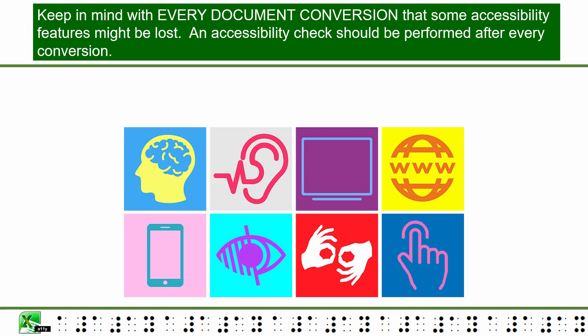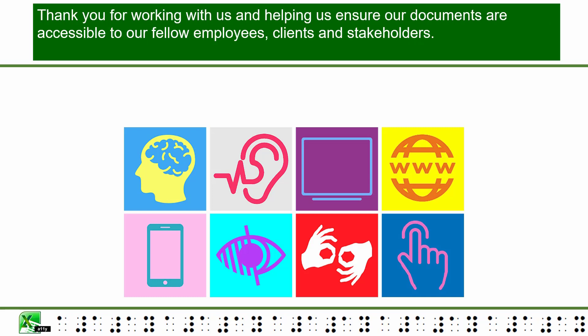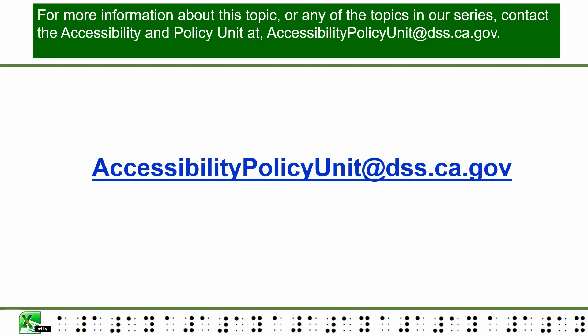Keep in mind that with every document conversion, some accessibility features might be lost. An accessibility check should be performed after every conversion. Thank you for working with us and helping us ensure our documents are accessible to our fellow employees, clients, and stakeholders. For more information about this topic or any of the topics in our series, contact the Accessibility and Policy Unit at accessibilitypolicyunit@dss.ca.gov.